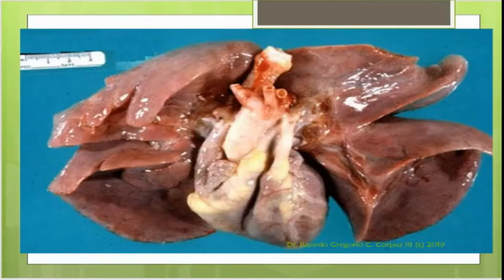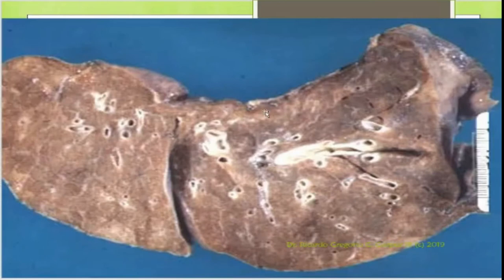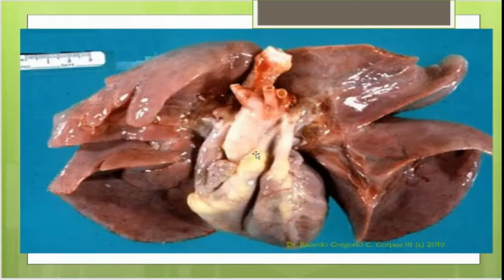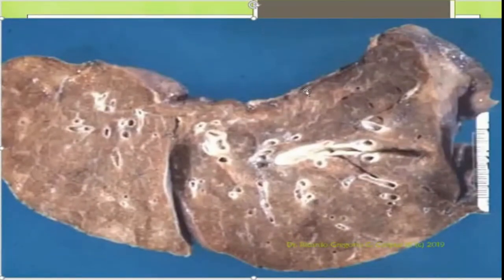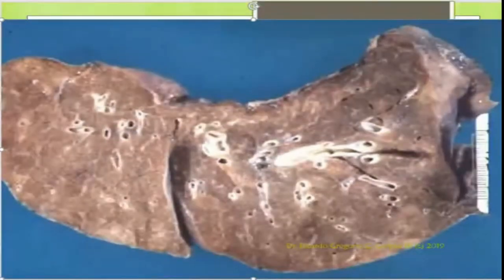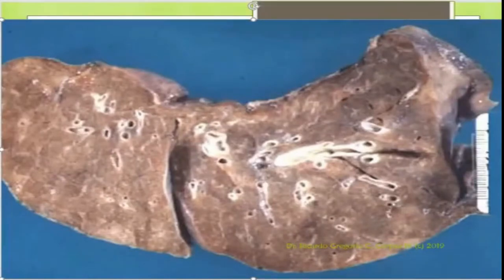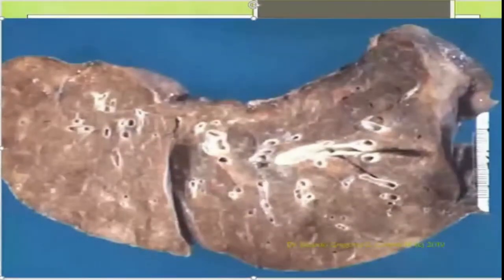Normal lung alveolar walls are not solid but perforated by numerous pores of Kohn, which permit passage of bacteria and exudate between adjacent alveoli. That's why if you have pneumonia or pulmonary abscess, there will be passage of pus in the lungs, making it easy to go from one surgical division to another. Looking at this lung specimen with a heart, you can appreciate the left lobe and the lingula.